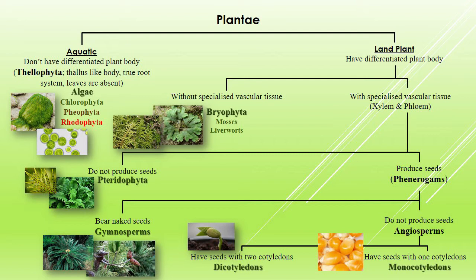If vascular tissues like xylem and phloem are present, then we have to consider the mode of reproduction. If they grow on land, water is not needed, and they reproduce by spore formation, then the organisms are grouped under pteridophyta — for example, ferns. If plants produce seeds, then they are grouped under spermatophyta. We then consider whether seeds are covered or not. If seeds are not covered — that is, naked — they are grouped under gymnospermia. If seeds are covered, they are grouped under angiosperms.